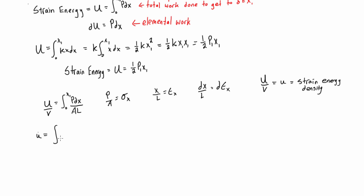We'll substitute P over A for our normal stress. And then we'll substitute this here for our elemental strain there. And then this means that we'll have to go from zero to strain to epsilon 1 there, or epsilon one.